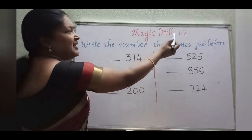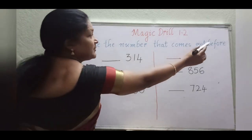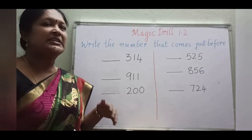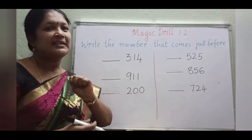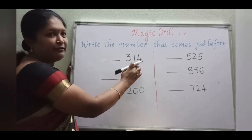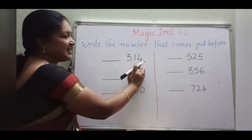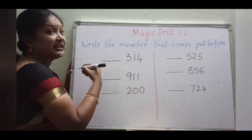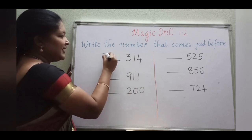Okay children, let us do magic drill 1.2. Read the heading: Write the number that comes just before. Some numbers are given and you have to write the before numbers. Before numbers means backward counting: 5, 4, 3, 2, 1, 0. So see here, what is this number? 314. So 314 before — check the 1's place and 10's place together: 14 is there, and 14 before is 13. So 314 before is 313. Go to the next number: 911. 11 before is 10, so 911 before is 910.